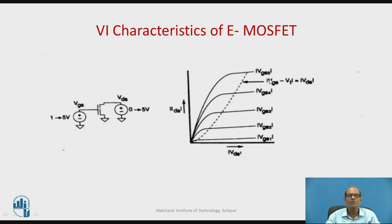VGS 1, 2, 3, 4, and 5, and this dotted line is the boundary, that is VGS minus VT is equal to VDS.